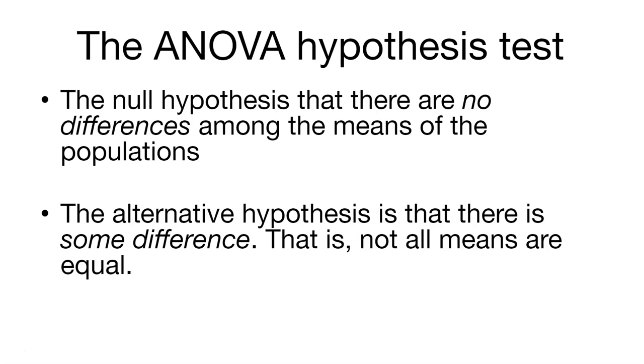In our case, we have six different iron levels. And so the null hypothesis would be that there's no differences across any of those.